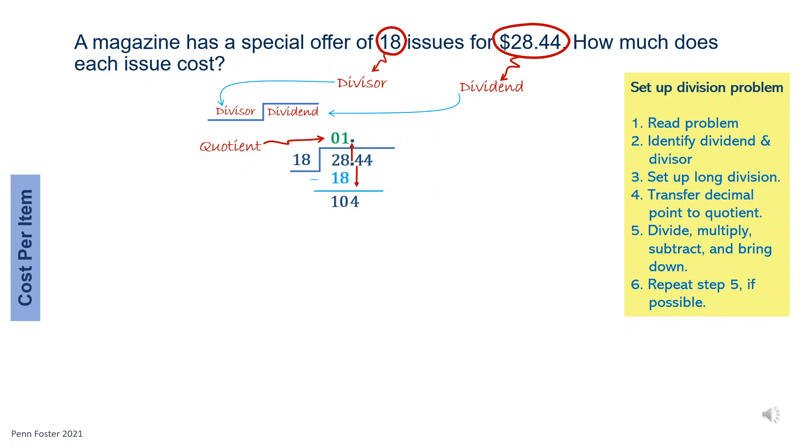At this point, 104 is the new dividend, so another division cycle will begin. Divide 104 by 18. 18 goes 5 times into 104. Multiply 5 times 18. It's 90. Subtract 104 minus 90. It's 14. Now, bring down the second 4 in line from the original dividend. The new dividend is now 144. Start a new cycle.